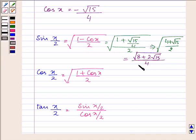Similarly we have the value of cos x/2. After all these calculations and rationalizing it will be √(8 - 2√15)/4.